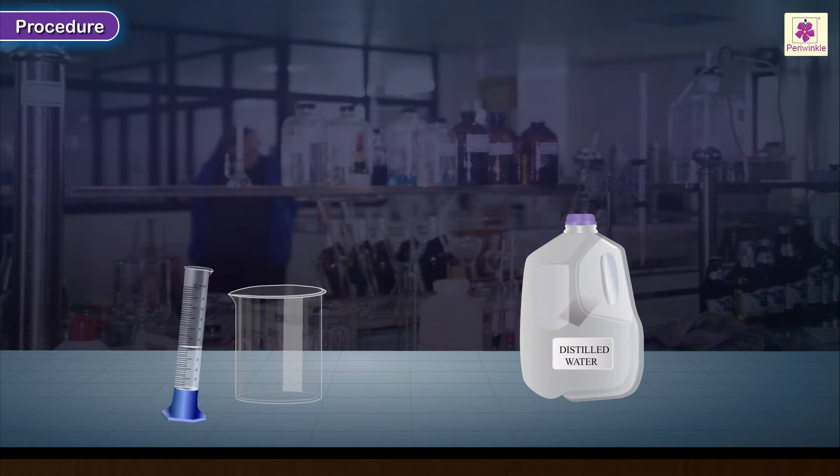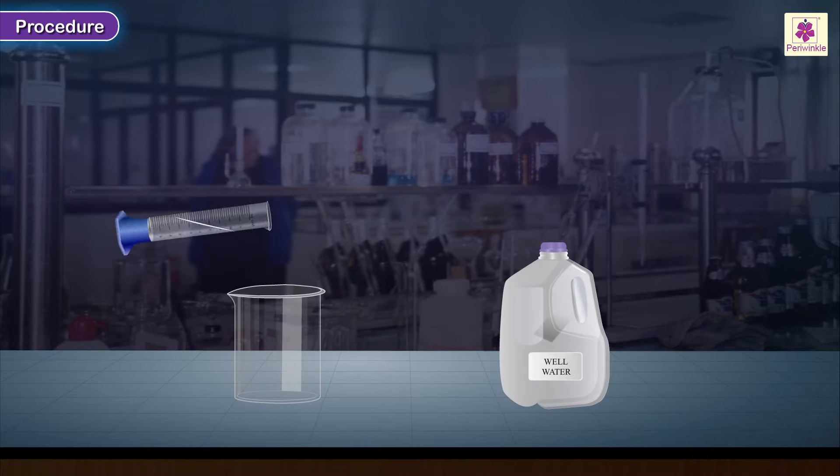Procedure: Take 20 ml of distilled water in a beaker and label it as A. Take 20 ml of well water in another beaker and label it as B.